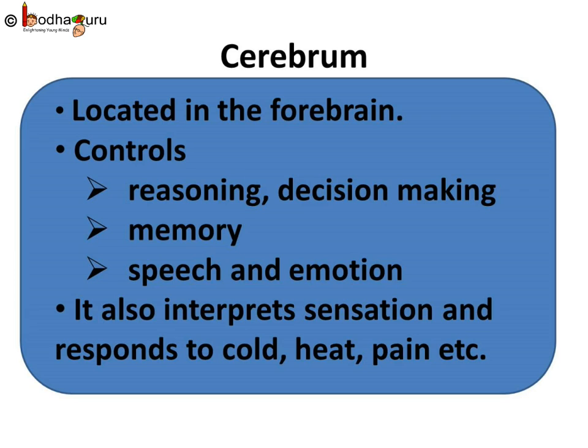To sum up what we learnt today: Cerebrum is located in the forebrain and it controls reasoning, decision making, memory, speech and emotion. It also interprets sensation and responds to cold, heat, pain, etc. Remember, the cerebrum part of our brain controls all the thinking and decision making.